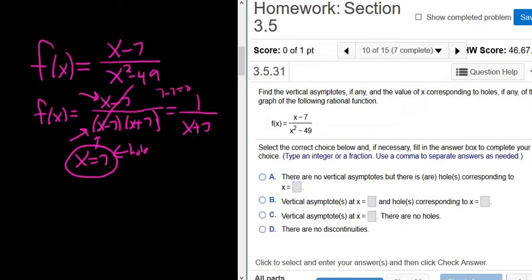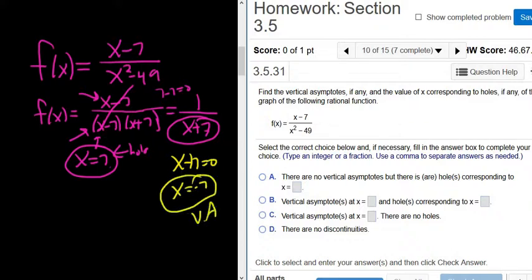And then to find the vertical asymptote, you just take this bottom piece here and set it equal to 0. So we get x equals negative 7, and there's our vertical asymptote.